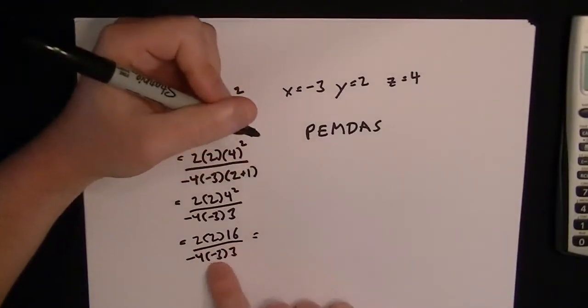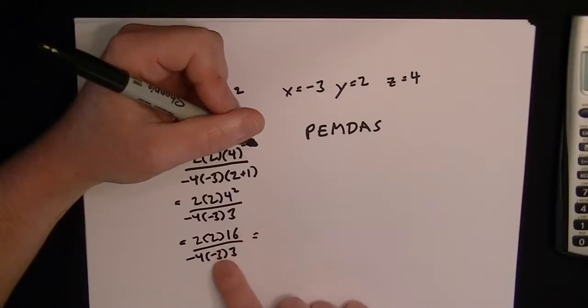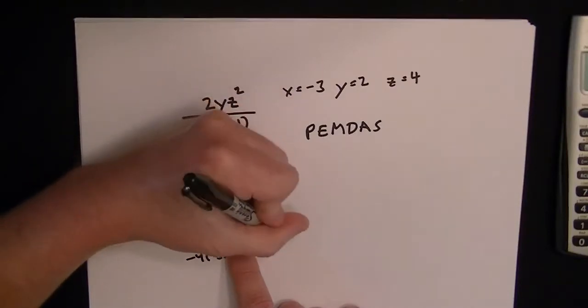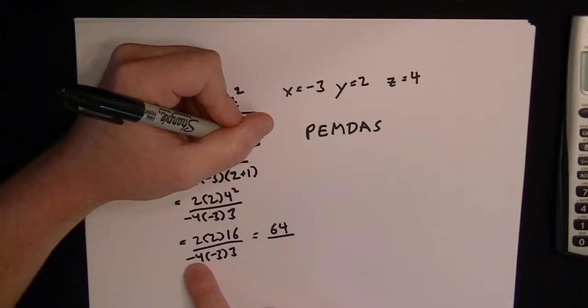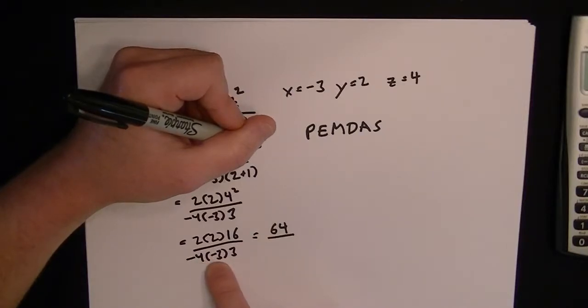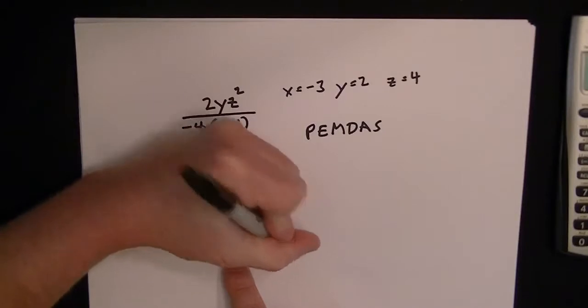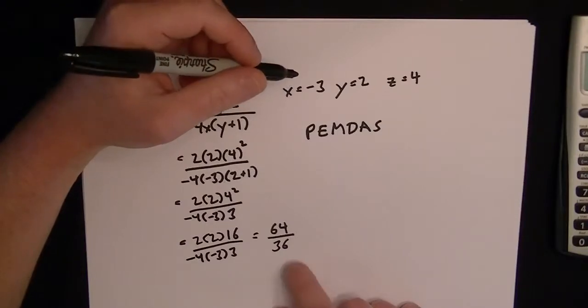So you have 2 times 2 and 4 squared is equal to 16 divided by negative 4 times negative 3 times 3. Now it's all just multiplication. There's no more parentheses that matter. There's no more exponents. So we can take 2 times 2 is 4 times 16 will give us 64. And then we have minus 4 times minus 3 because you've got the minuses multiplied, they become positive, so it gives us 12. 3 times 12 is 36.